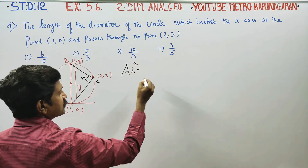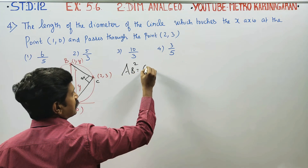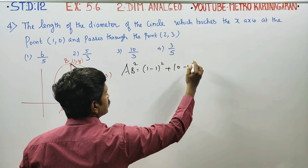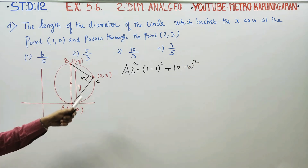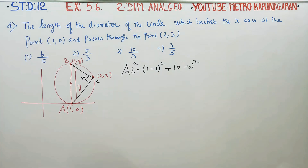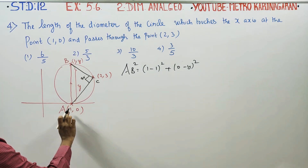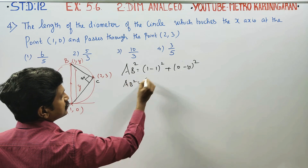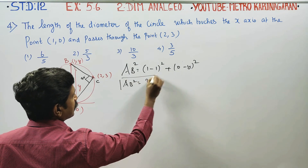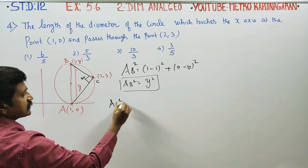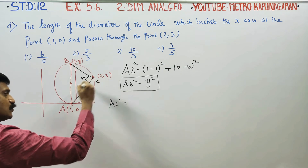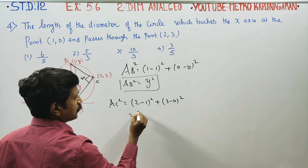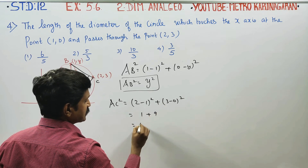AB² is equal to, using the distance formula: (x2 - x1)² + (y2 - y1)². For AC²: (2 - 1)² + (3 - 0)² = 1² + 3² = 1 + 9 = 10. So AC² = 10.